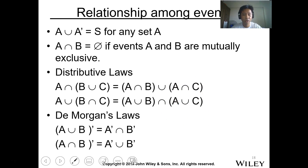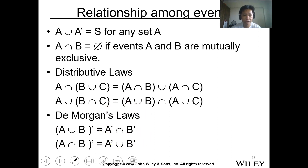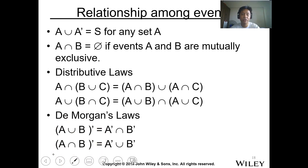For De Morgan's law, the complement of the union of A and B is equal to the intersection of the complement of A and the complement of B. Also, the complement of the intersection of A and B is equal to the union of the complement of A and the complement of B.